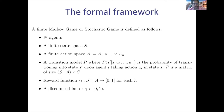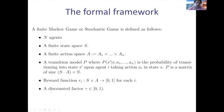Moreover, every player has a reward function that depends on the state and the actions of all players. Without loss of generality we assume it's in [0,1]. For technical reasons, we introduce a discount factor gamma, a number between zero and one. This is very standard in infinite time horizon Markov decision processes.